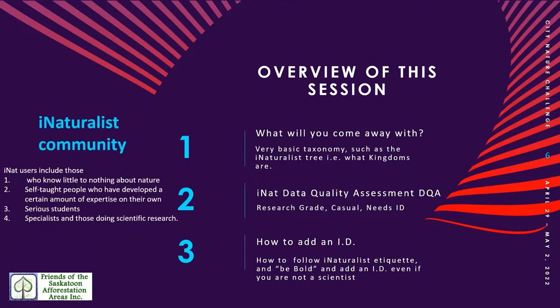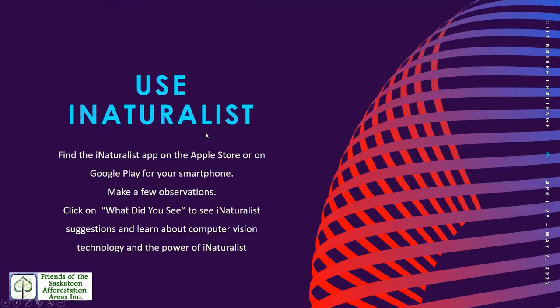The iNaturalist community is varied. It includes those who know little to nothing about nature, self-taught people who have developed a certain amount of expertise, serious students, and specialists doing scientific research. So it's an amazing mix. To begin, try to use iNaturalist just to get used to it. Find the iNaturalist app on the Apple Store or on Google Play for your smartphone. Make a few observations around you. Click on 'what did you see' to see iNaturalist suggestions and learn about computer vision technology and the power of iNaturalist.